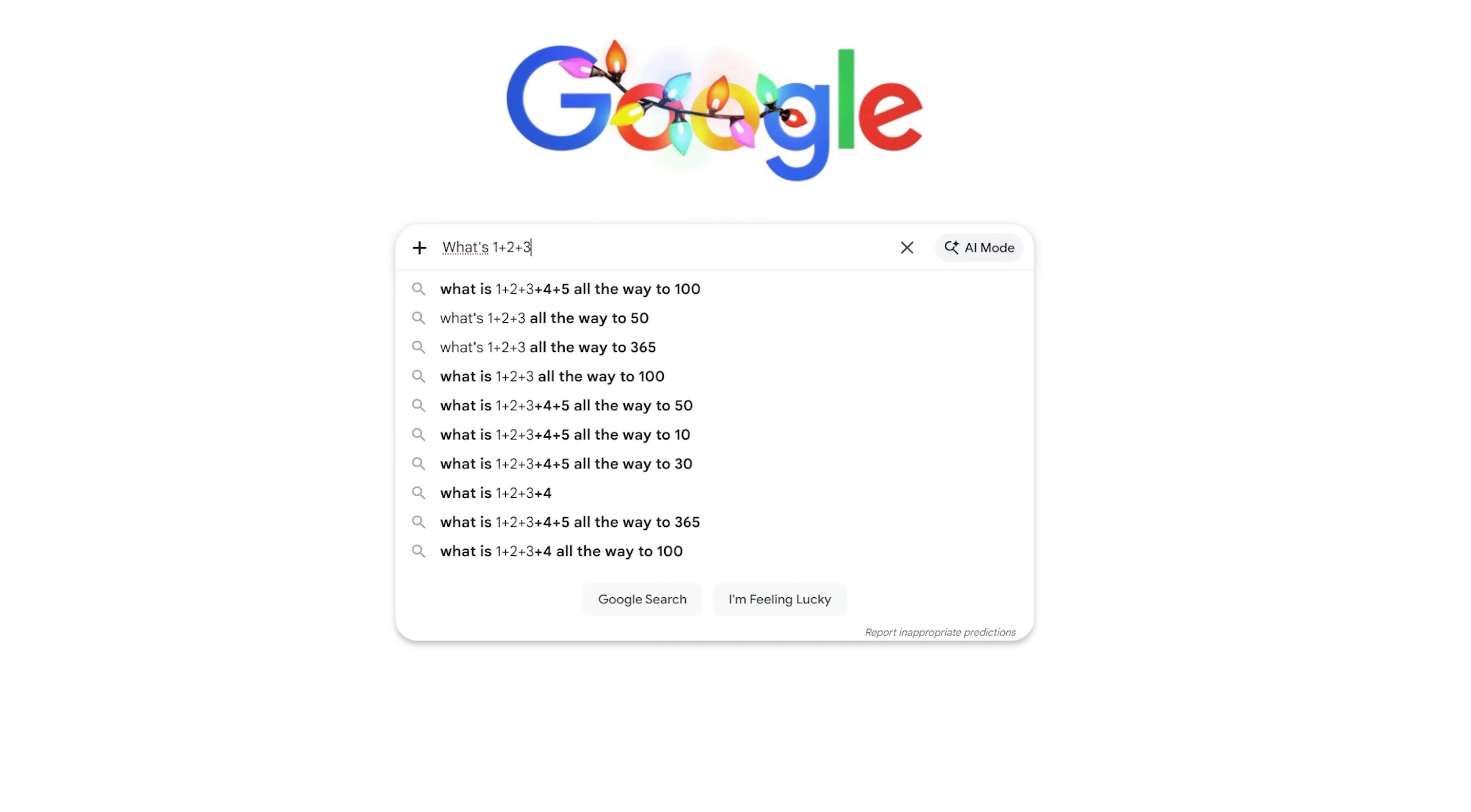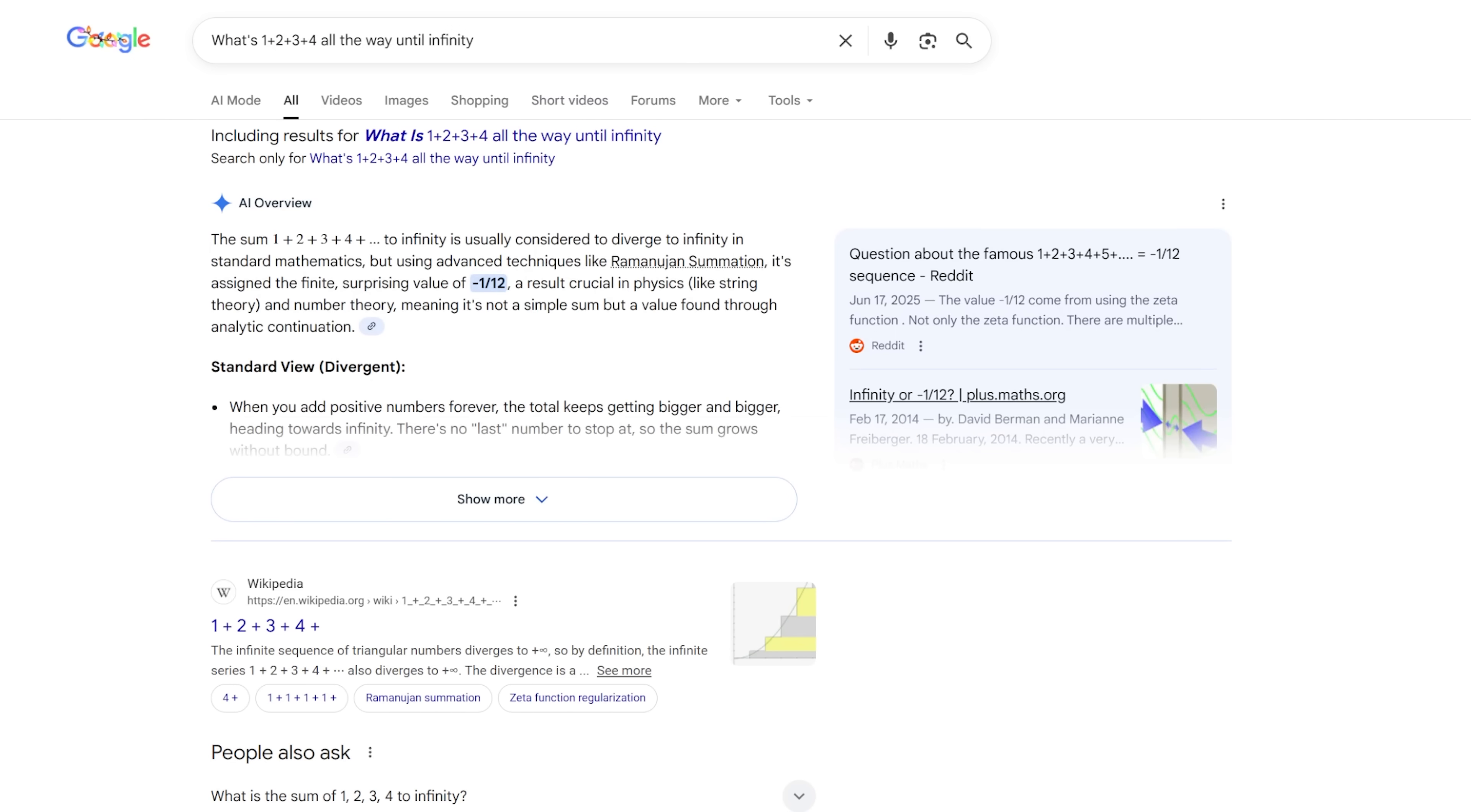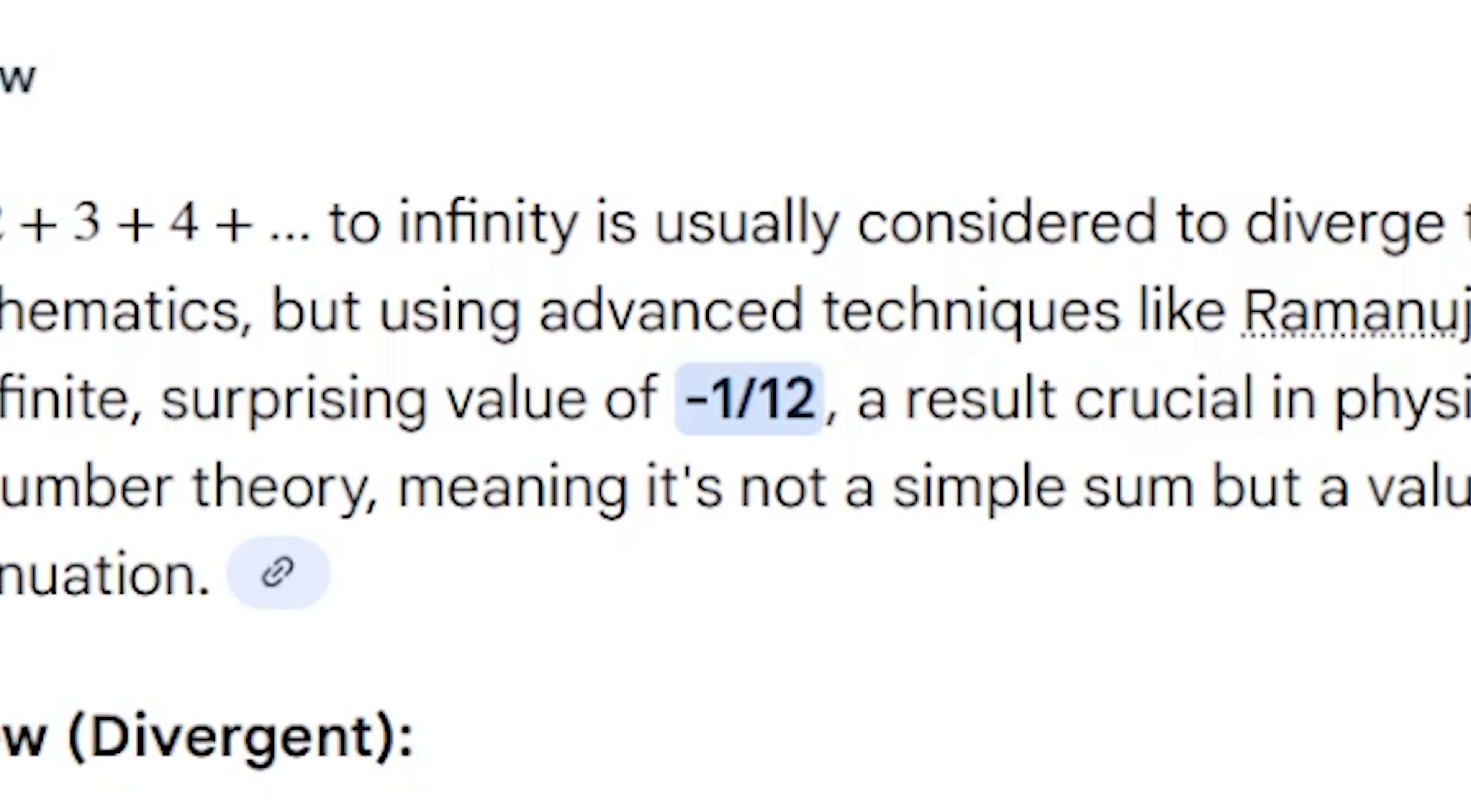What's 1 plus 2 plus 3 plus 4 all the way until infinity? Negative 1/12th? That can't be right. Negative 1/12th?